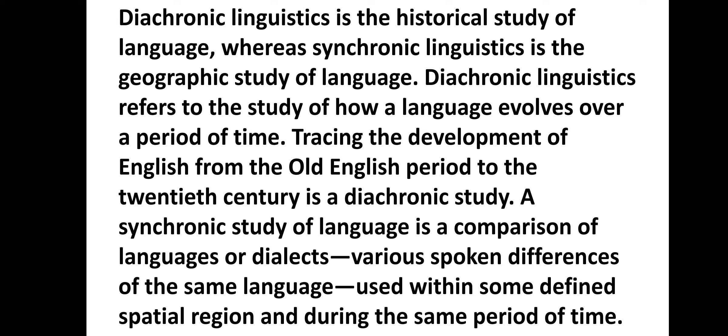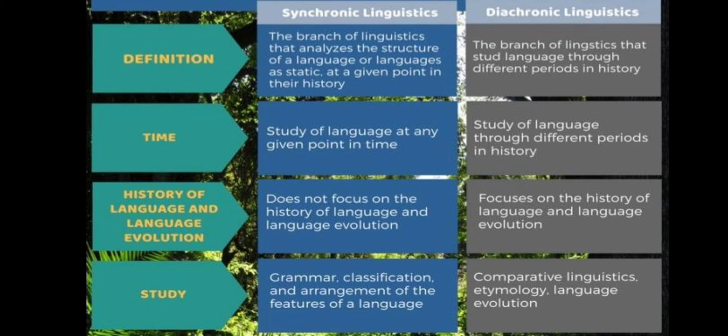For example, the way in which French and Italian have evolved from Latin, or Hindi from Sanskrit. I hope that is clear. Synchronic linguistics is concerned with the logical and psychological relations that bind together co-existing terms and form a system in the collective mind of speakers. Whereas diachronic linguistics, on the contrary, studies relations that bind together successive terms not perceived by the collective mind, but which substitute for each other without forming a system.